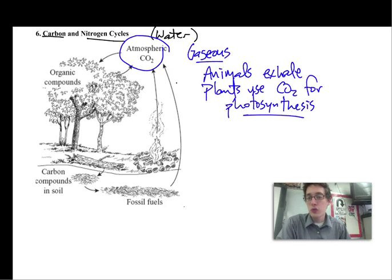This is the autotroph portion of the process. This atmospheric carbon dioxide is taken in by a plant - we can see over here in the trees. They're organic compounds. Remember, organic is anything that contains carbon. So these trees are pulling atmospheric carbon dioxide into them.